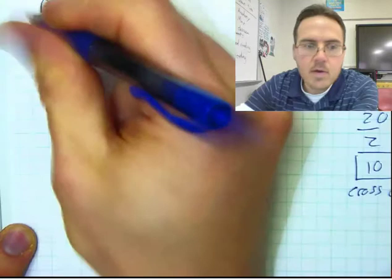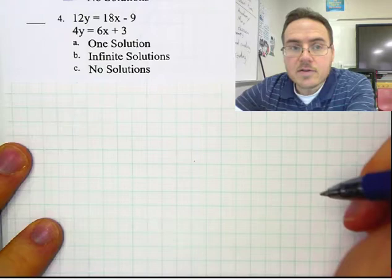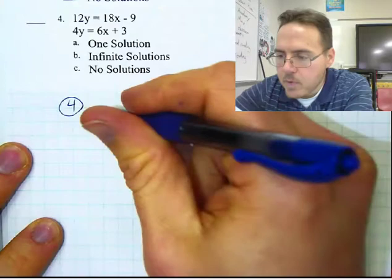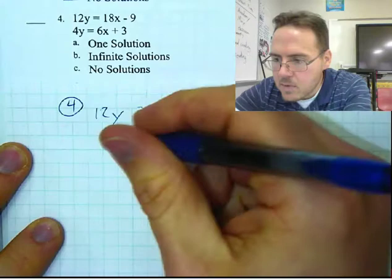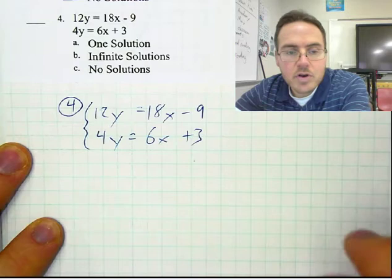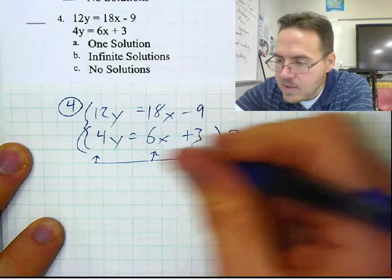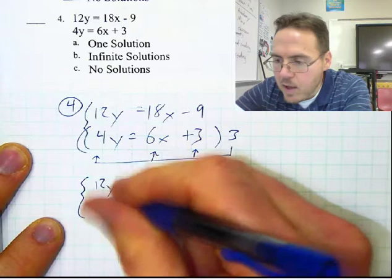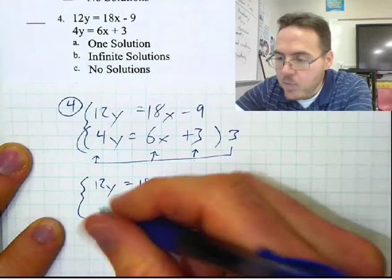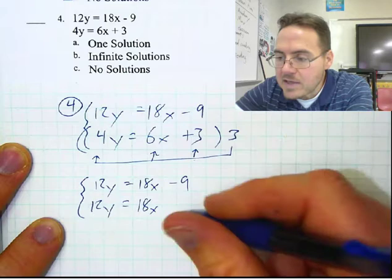Let's move along to number 4. We have 12Y equals 18X minus 9, and 4Y equals 6X plus 3. 4Y and 12Y are easy to match. I'm going to multiply the bottom row times 3 and distribute a 3 to every single term. Top row stays unaffected: 12Y equals 18X minus 9. 3 times 4Y is 12Y — that's what we wanted. 3 times 6X is 18X. 3 times 3 is positive 9. So they are not the same line.